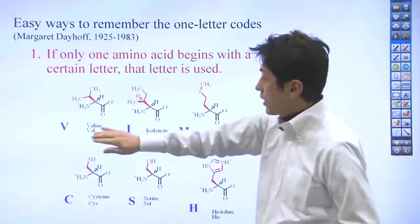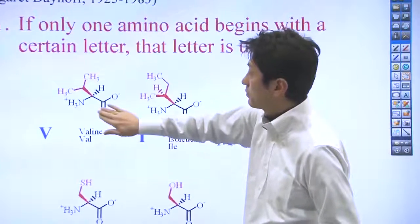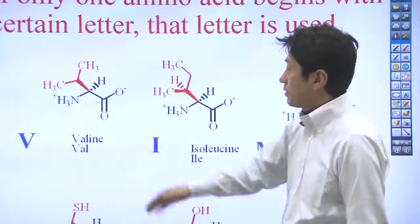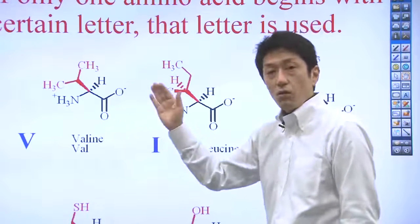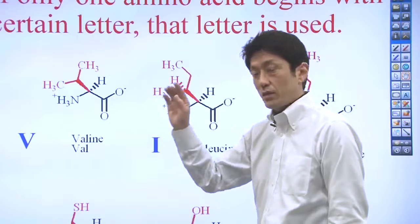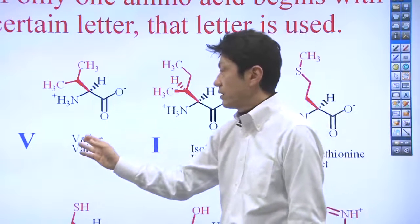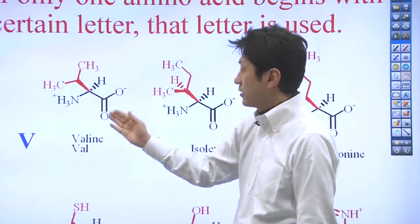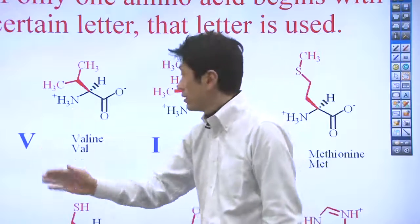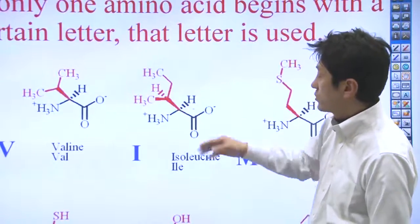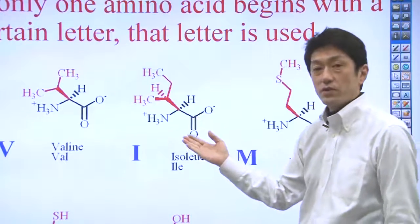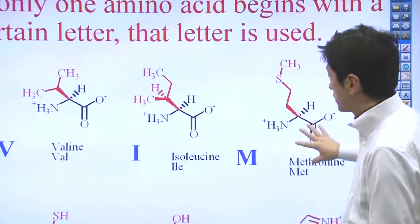For example, look at valine. Here's the structure of valine. Valine is the only amino acid that starts with V. That's why valine is V. Then, here's isoleucine. Isoleucine is the only one that starts with I. That's why I. It's really easy.